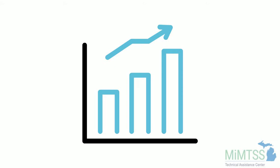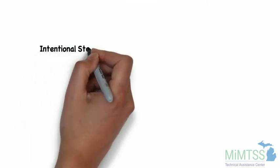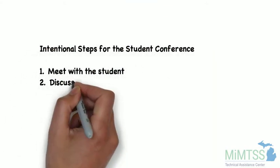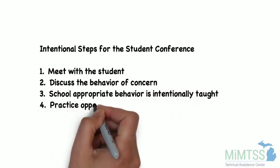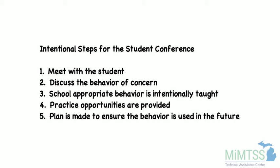Here are the intentional steps for an effective student conference. First, you're going to set up a time to meet with the student. This will allow both you and the student to have time dedicated to the conference and its focus. It likely should not be an impromptu meeting and should be set up at a time when both you and the student can have a private conversation. This allows both of you to be in a frame of mind focused on problem solving, rather than immediately following a behavioral incident when emotions are running high.